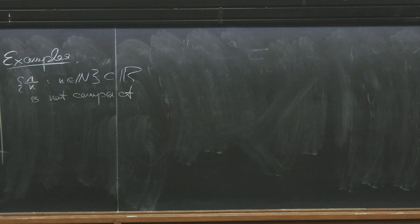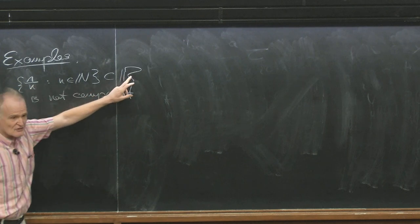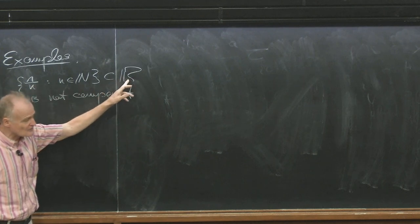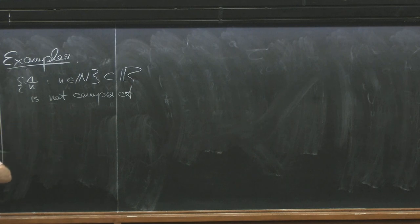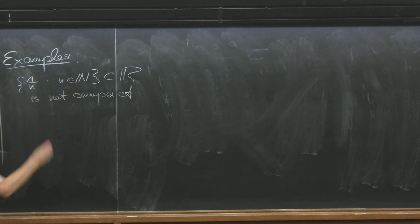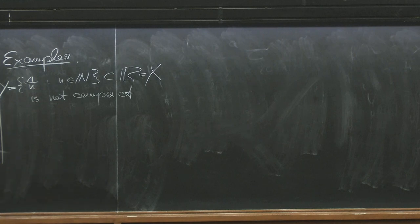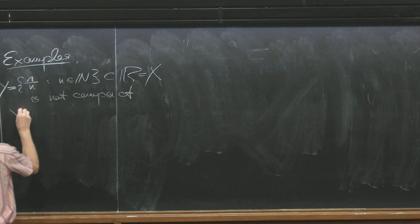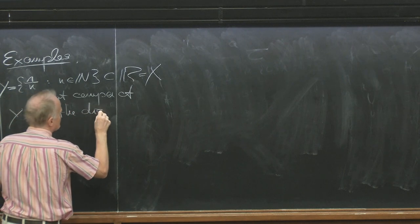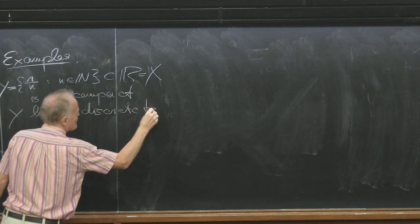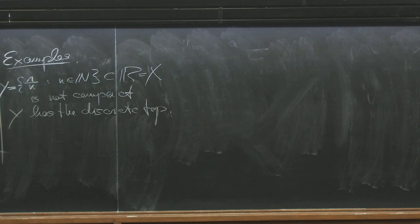It's easy to prove not compact, but not always useful. It may be difficult to prove something is compact, but that is useful. For example: {1/n : n in N} as a subspace of R. It's not compact. In analysis you say it's not closed, but that's not our definition. It has a discrete topology — when is a discrete space compact? Only when it's finite.